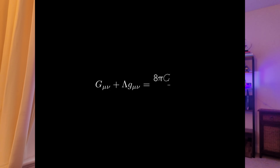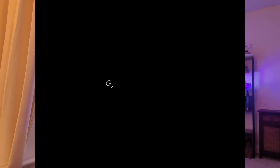And here it is. This might look a little intimidating at first, but it's basically the universe's balance sheet. The left-hand side describes the geometry of spacetime — how it curves, bends, and stretches. The right-hand side describes the content of spacetime, all the matter and energy floating around in it. Let's break it down a little further.